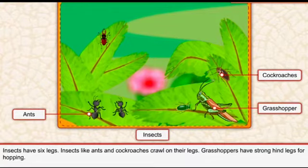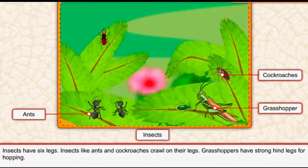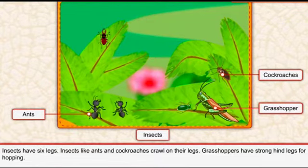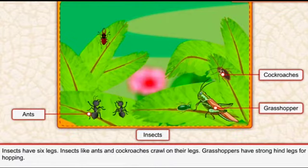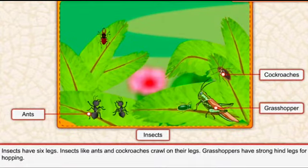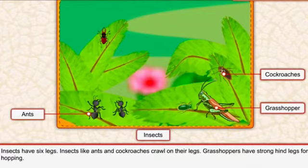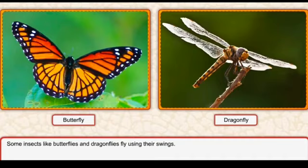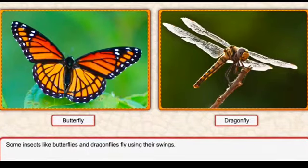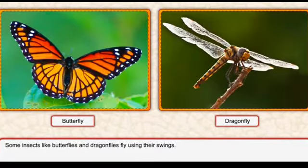Grasshoppers have strong hind legs. Grasshopper ke paas do strong hind legs hoti hain jis ki madad se woh hopping karta hai. Hopping mean uchhalna - grasshopper uchhal kar ek jaga se doosari jaga move karta hai. Hind legs word ka matlab hai peechhe wali do taangein.